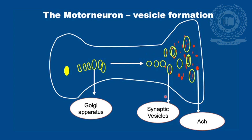Synaptic vesicles are formed from the budding Golgi apparatus and are transmitted to the nerve terminal by axonal streaming. Acetylcholine is formed in the cytoplasm and transported into the vesicles. These acetylcholine-filled vesicles occasionally fuse with the presynaptic membrane and release their contents — acetylcholine — via exocytosis. This causes miniature end plate potentials in the post-synaptic membrane.